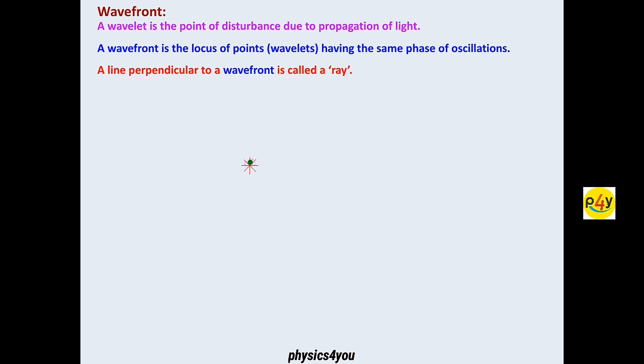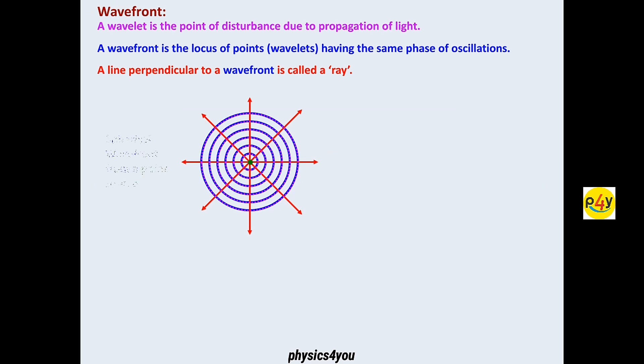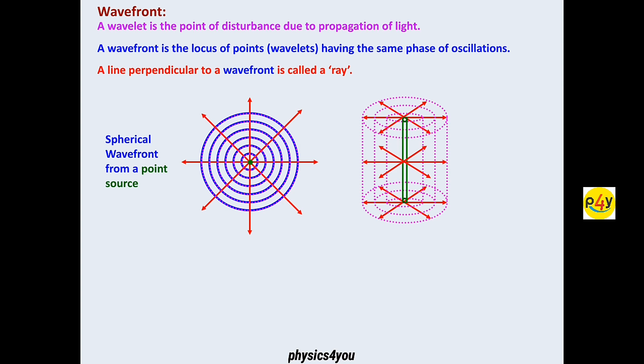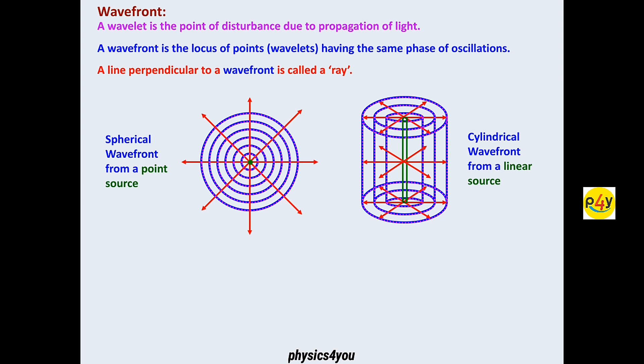For example, if we look here, this is a point, this is your source. The pink color dotted circular part is the wavefront. This is the spherical wavefront from a point source. The other one is the cylindrical wavefront from a linear source.